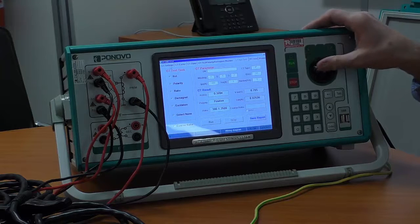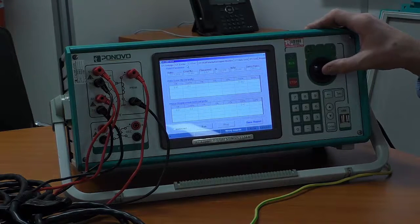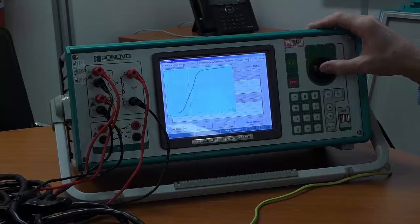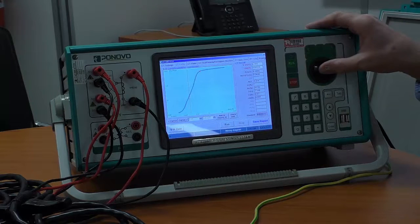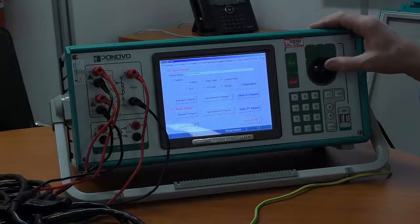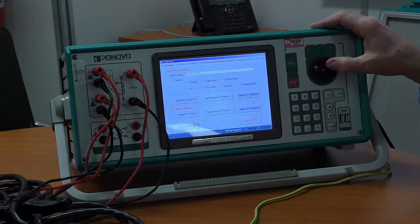Now we can come over here. We can have a look at the, there's the CT ratios, CT excitation curve, all the data. Now, if we want to report it, it's relatively simple. Just come over to this report panel.